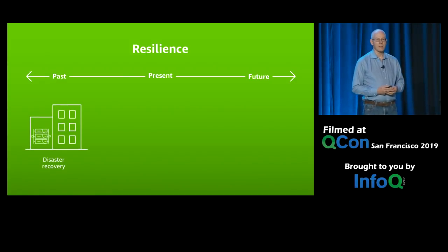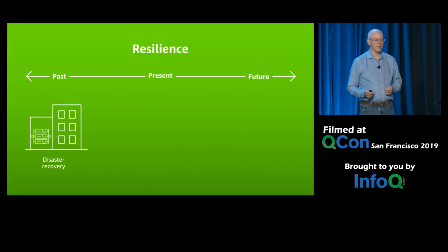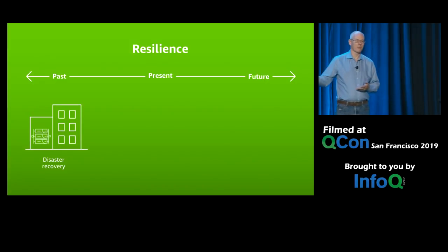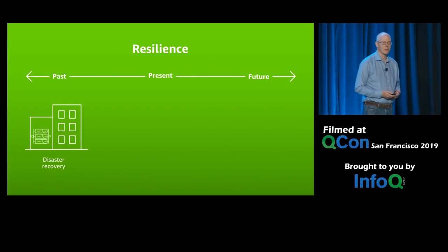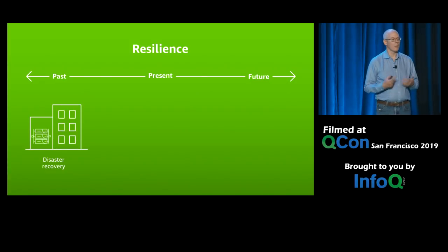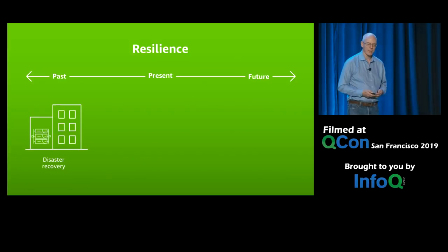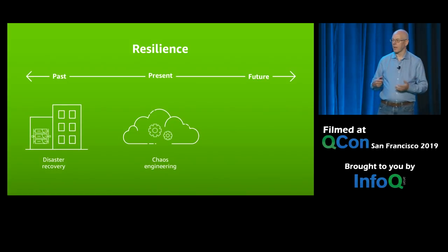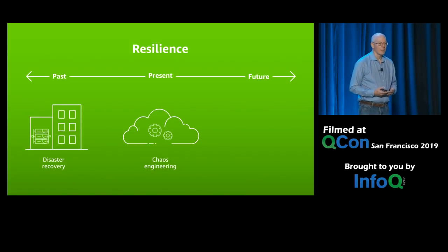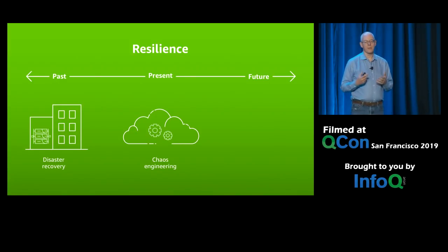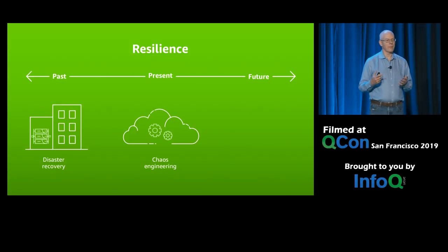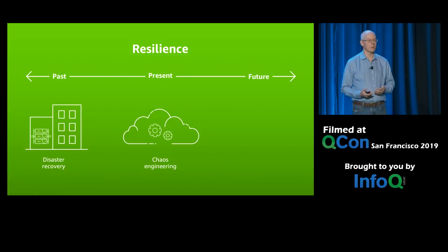In the past, we had disaster recovery. Back in the 70s, this started. You had a mainframe over here and you could have another mainframe over there, and you'd copy stuff back and forward. If something went wrong, you could switch to the other one. That was the traditional disaster recovery model, which then became more institutionalized with backup data centers. Then between Amazon, Netflix, and a few others, we came up with chaos engineering a decade or so ago, where we started to induce failure. The difference in chaos engineering is it's API-driven — everything was highly automated — so we could use automation to do disaster recovery more proactively.